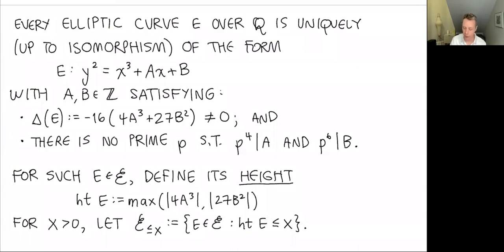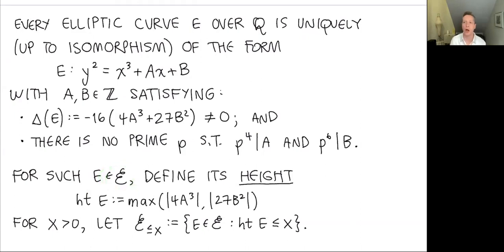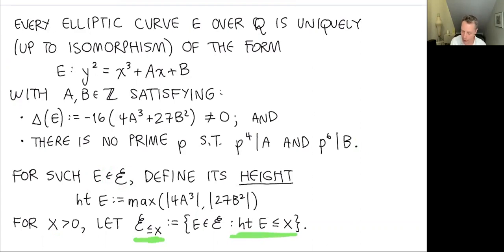It's natural to define the height of E as the maximum of |4A³| and |27B²|, reflecting how A and B are weighted in the homogeneous rescaling. We define the set of isomorphism classes of elliptic curves with these two minimality properties, and for a bound X we take those whose height is at most X. There are only finitely many for each X — A and B are bounded in a weighted way — so you can write them all down or even choose one uniformly at random.